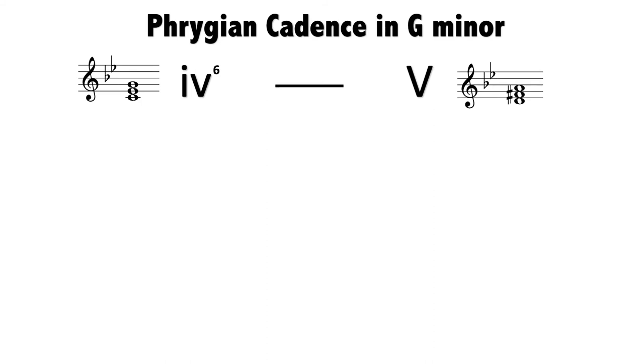Let's build a Phrygian cadence in G minor. The first chord must be a minor iv⁶ chord. In G minor, the minor iv chord is C, E♭, and G. The final chord we need for a Phrygian half cadence is still a root position V chord. In G minor, this chord is D, F♯, and A.